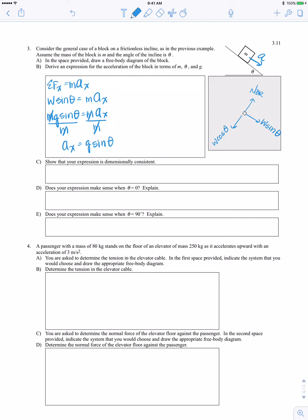Showing that it's dimensionally consistent, we plug in units. Acceleration would be meters per second squared. Sine theta is dimensionless, so we get meters per second squared.